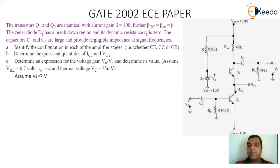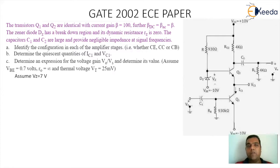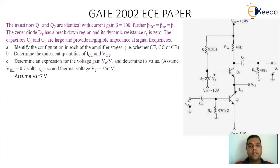This is the circuit diagram given to us where Q1 and Q2 are identical, having the same DC current gain and same AC current gain, that is beta DC equal to beta AC equal to beta, with value equal to 100. The question asks us to identify the configuration in each amplifier stage, determine the quiescent quantities IC1 and VC1, and determine the expression for voltage gain VO by VS.